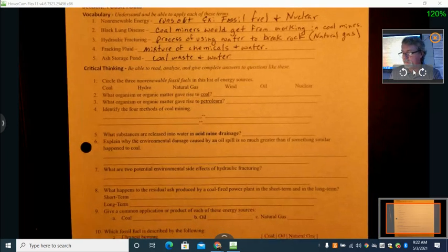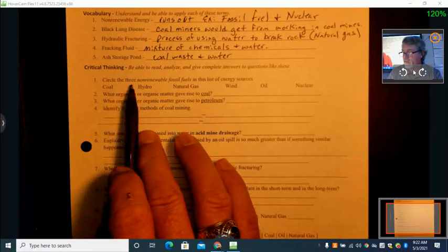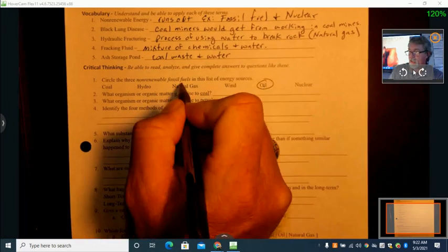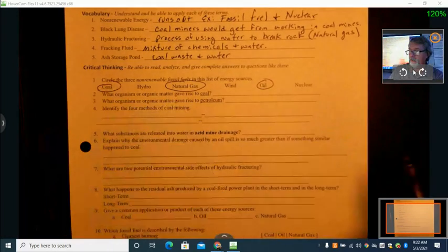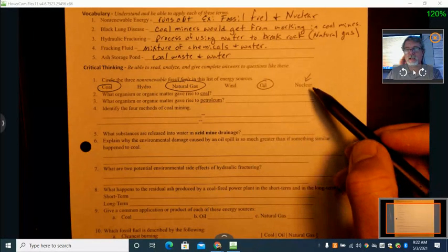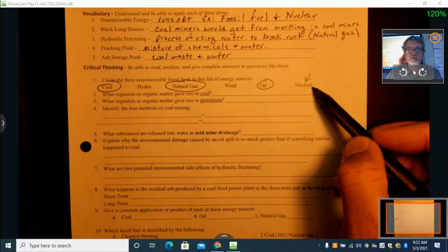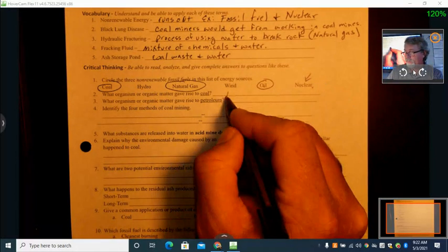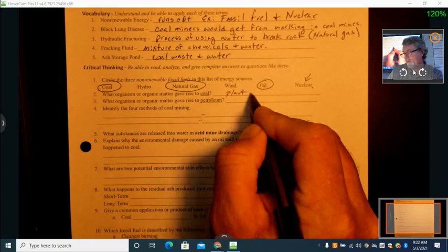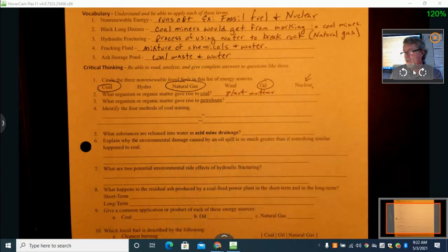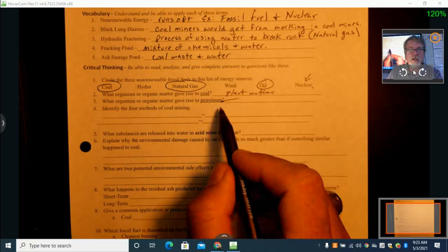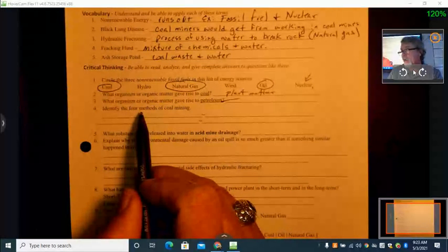So let's look at these non-renewable resources here. Circle the three non-renewable fossil fuels in the list of energy sources. So we got oil, natural gas, and coal. Of course, nuclear is non-renewable, but it is not a fossil fuel. What organism or organic matter gives rise to coal? Plant matter. Same thing there for petroleum. You're not going to be asked that. I was actually thinking about removing those questions, but identify four methods of coal mining.